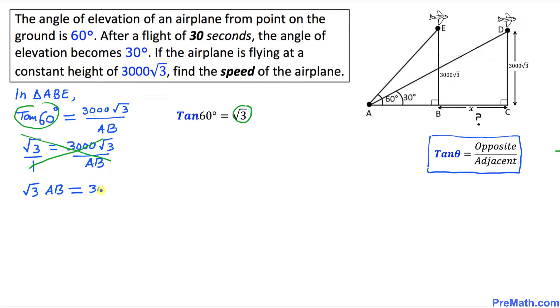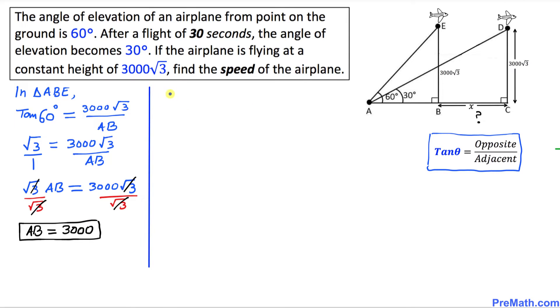Since I want to isolate AB, I'm going to divide both sides by √3. So this √3 and this √3 cancels out, and we end up with AB equal to 3000.